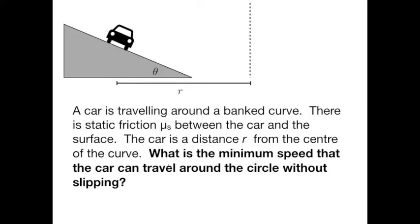And we want to know what the minimum speed is that the car can travel around the circle without slipping. Now the trick here is that when we're considering the free body diagram, there's a few forces at work on the car.